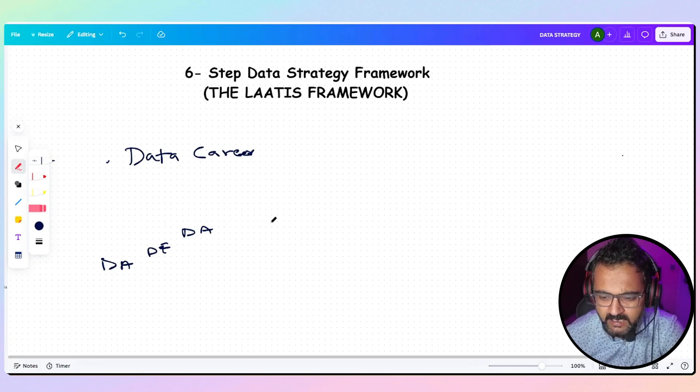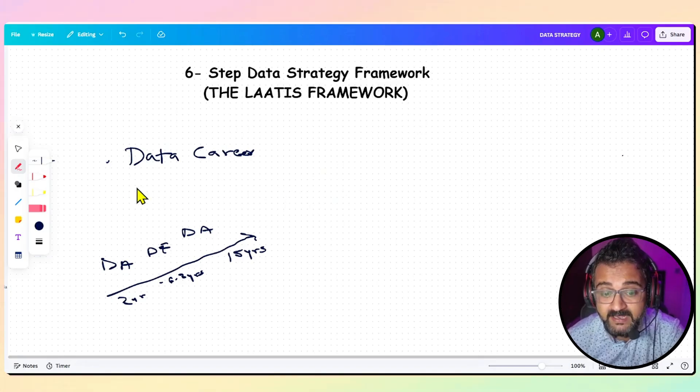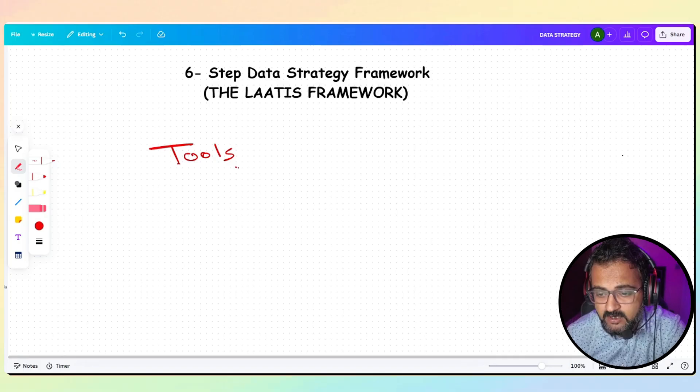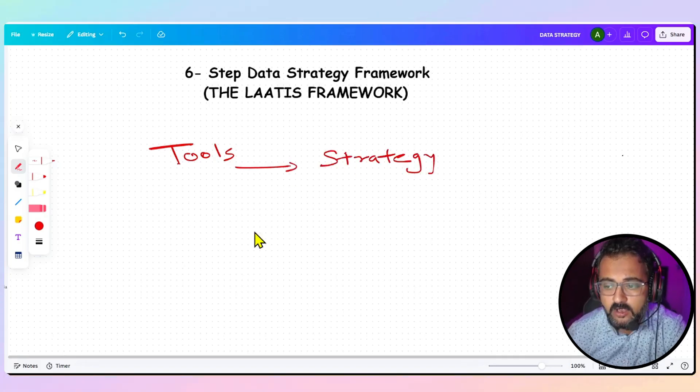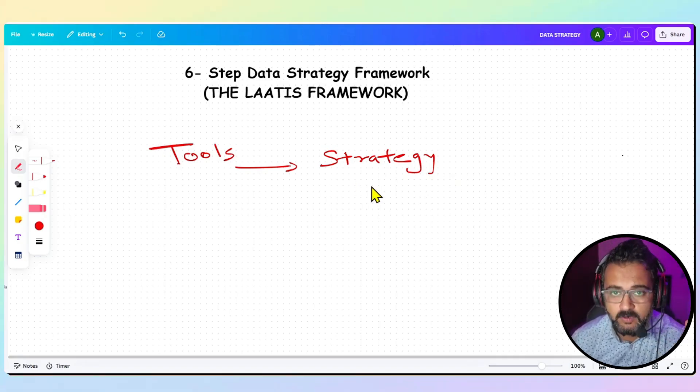You can also become a data architect, and your career progresses like this. But there will come a point—it could be two years, six to eight years here, and then fifteen years—there will come a point where you will start understanding the nuances of a data strategy and why data strategy is so important. You will understand that you have to move beyond tools and talk strategy.